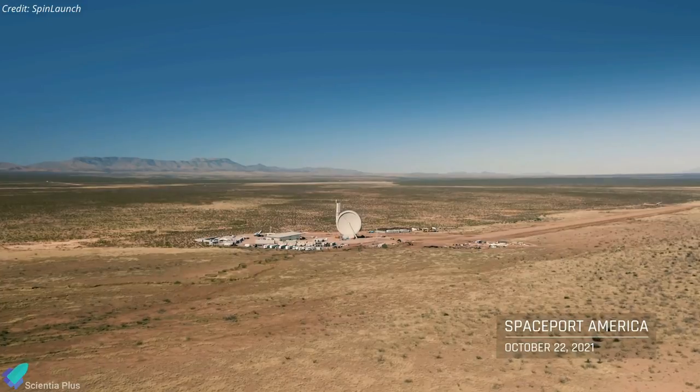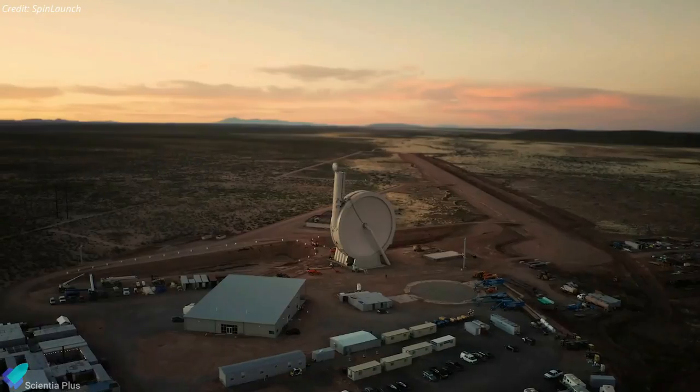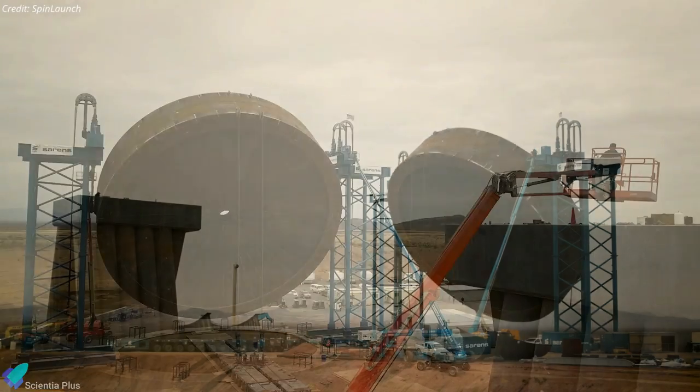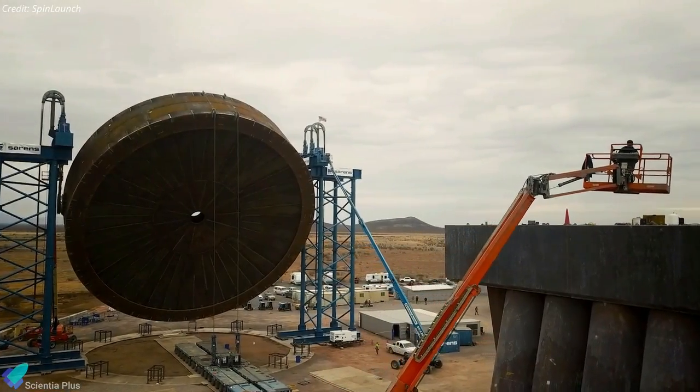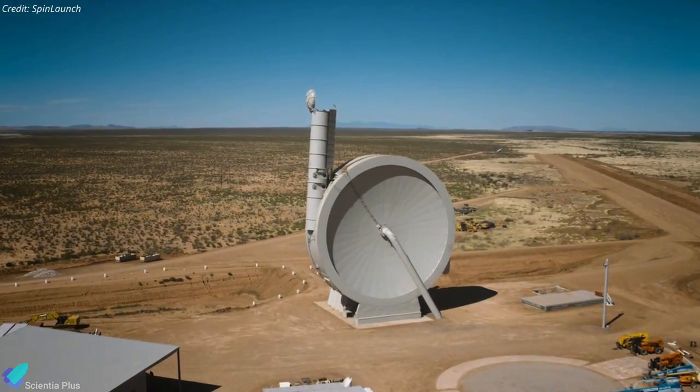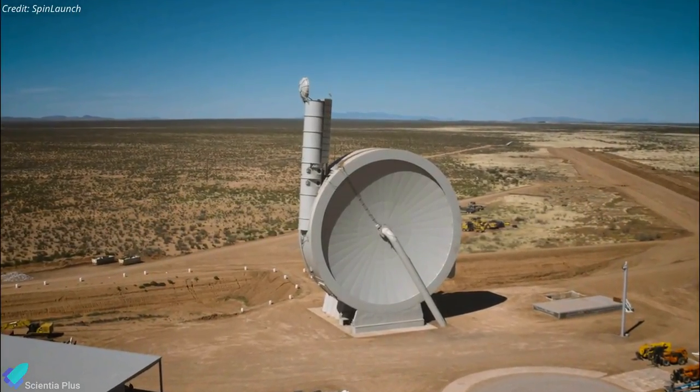The suborbital flight test took place on October 22 at Spaceport America in New Mexico, where the company built a 33 meters diameter and 50 meters tall prototype version of its accelerator. The prototype accelerator is one-third scale of the operational system that is being designed.